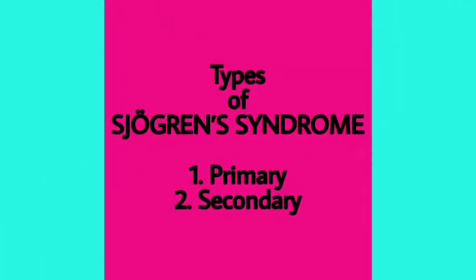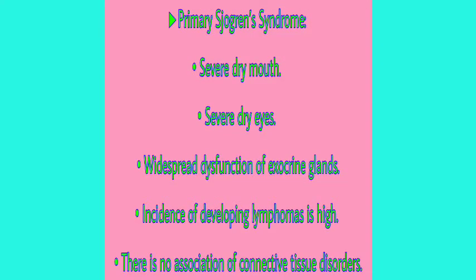There are two types of Sjögren's syndrome: primary and secondary. In primary Sjögren's syndrome, there is severe dry mouth, severe dry eyes, widespread dysfunction of exocrine glands, and a high incidence of developing lymphomas. There is no association with connective tissue disorders.